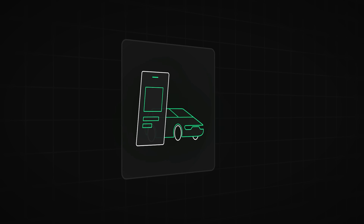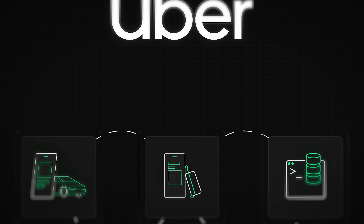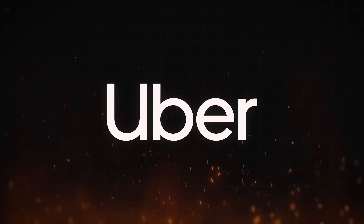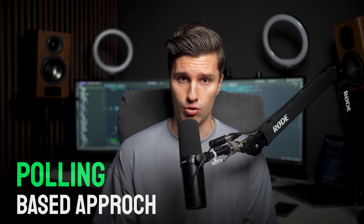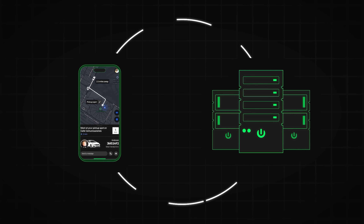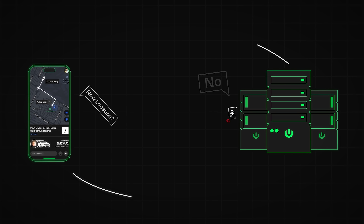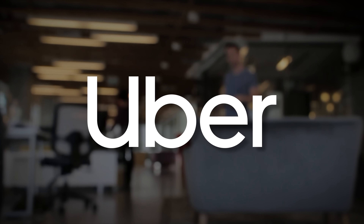How does the Uber app on the backend really achieve such fluent updates for hundreds of millions of users, even in bad network conditions? Originally, Uber stuck to a polling-based approach where the app simply asked the server for new data — in a simple loop, the client repeatedly asked things like 'are there new locations for nearby drivers?'